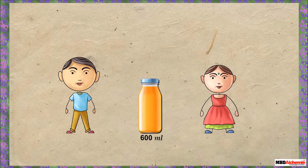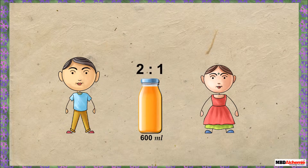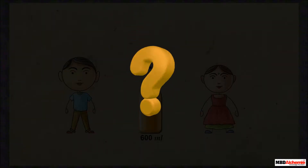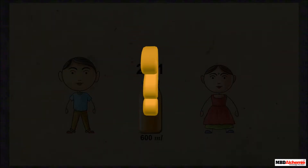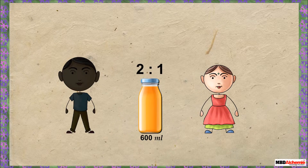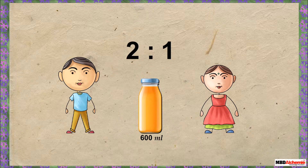After finishing the pizza, they ordered a 600 ml bottle of juice. Puja decided she had enough pizza, so she'll take less juice. Couple divided the juice in the ratio 2 to 1 between Couple and Puja. Can you calculate how much each will get? The juice is divided in the ratio 2 to 1, where the first term is for Couple and the second term is for Puja.